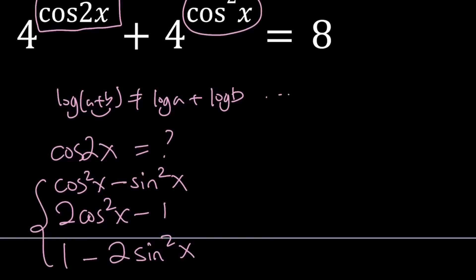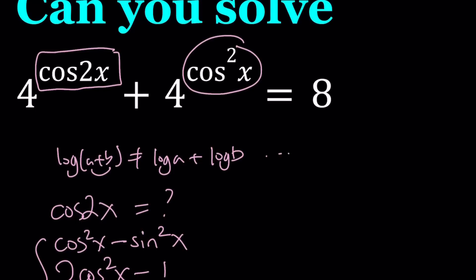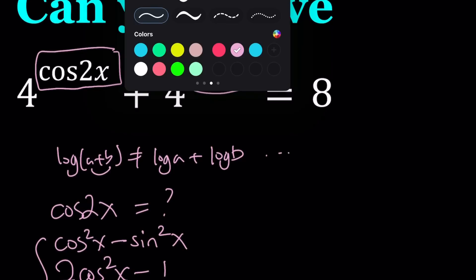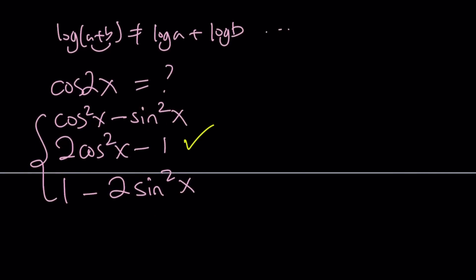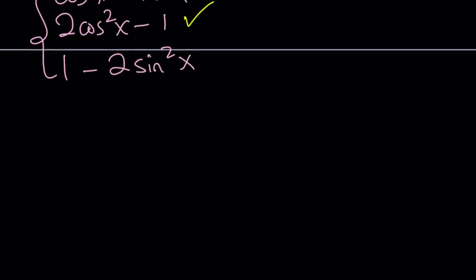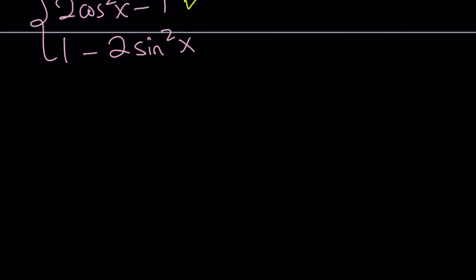Or you could write 2 cosine squared x minus 1, or you could write 1 minus 2 sine squared x. So cosine 2x is nice. It allows you to write the answer in terms of different things. Which one are we going to use? We're going to use the one that is most useful, which is the one that contains cosine squared x, of course. So it's the second one. Make sense? So here's what we're going to do.